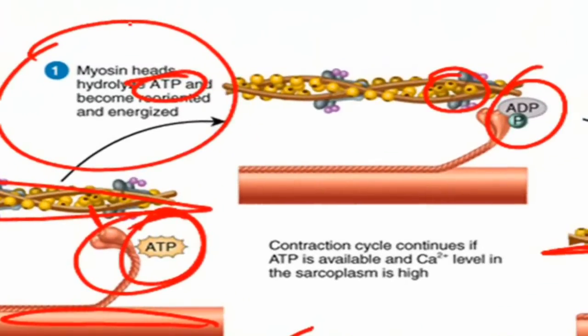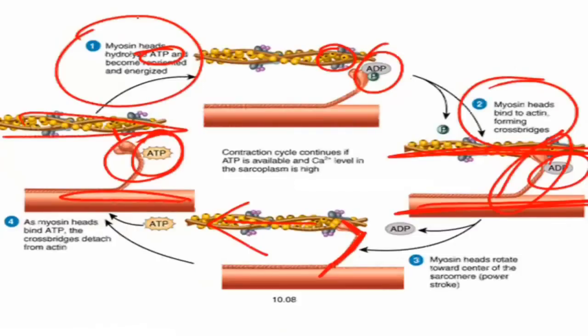The myosin heads can power stroke — which is the pulling of the thin filament towards the midline of the sarcomere — about five times a second. It takes multiple power strokes to create a full muscle contraction. The thin filaments will not be drawn towards the midline completely by one power stroke; it's many power strokes, like oars on a ship.